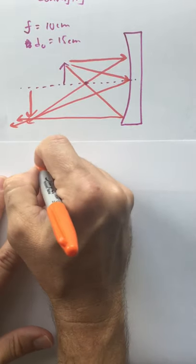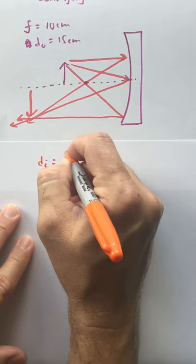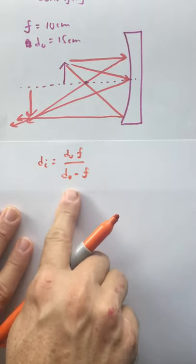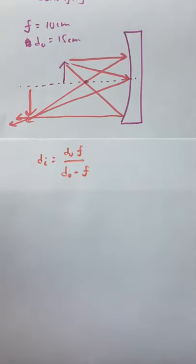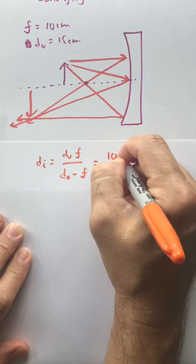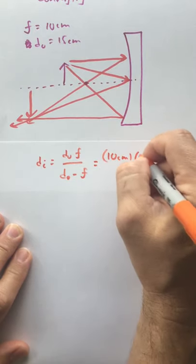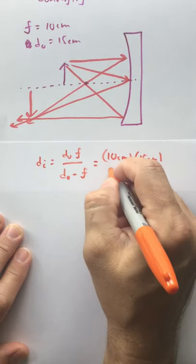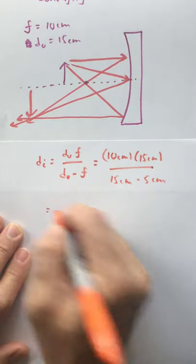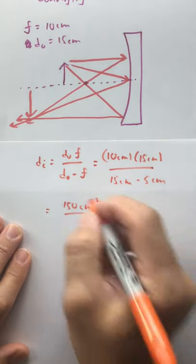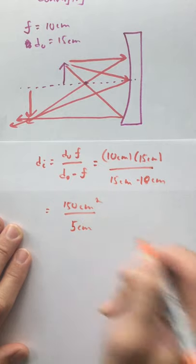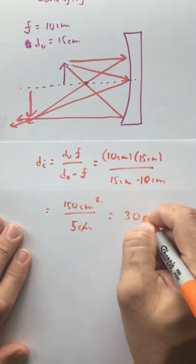Same equation: DI equals F times DO over (DO minus F). What do I get in this situation? I get 10 centimeters times 15 centimeters over DO minus F, that is 15 minus 10, which is 5 centimeters. I get 150 square centimeters over 5 centimeters — I get 30 centimeters. Subtraction is not commutative, so that order matters.